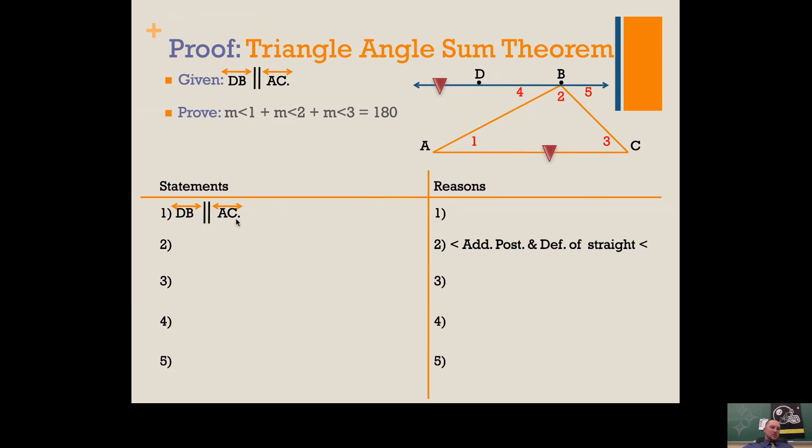We have parallel lines - that's our given information. Now our second reason is the angle addition postulate and definition of a straight angle. We're looking at these three angles together adding up to this line, so the measure of angle 4 plus the measure of angle 2 plus the measure of angle 5 must equal 180. We know that's true because these three angles make that line.